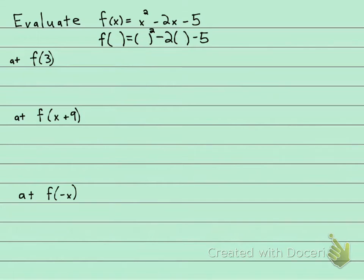Okay, so for this first one here they want f of 3, and what we're going to do is plug in 3 everywhere where we see x. So f of 3 equals 3 squared minus 2 times 3 minus 5.